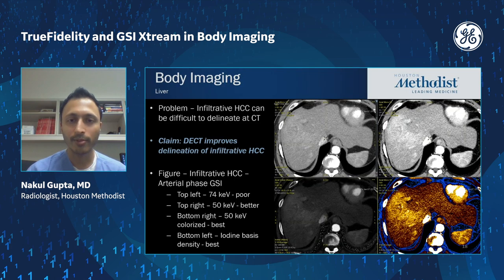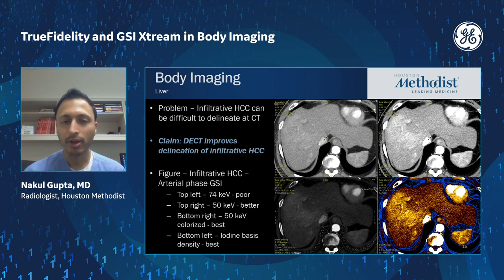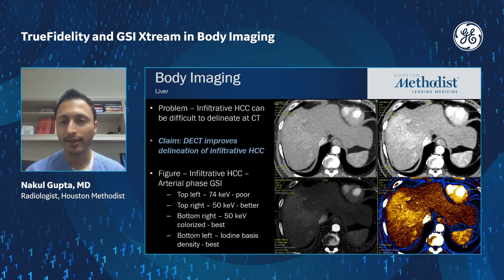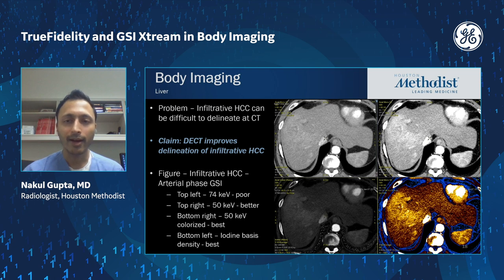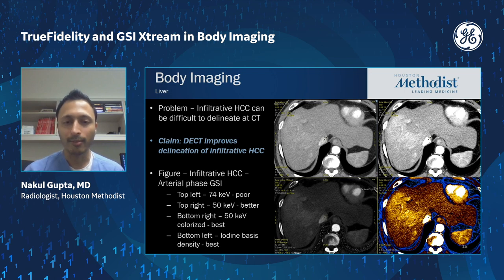Now switching gears to GSI Extreme. Liver imaging is a big use case of GSI or dual energy CT. The image layout has the top left as the 120 kVp equivalent monoenergetic image — in this case at 74 keV — to the right a 50 keV monoenergetic image, below that the same 50 keV image with a color map applied, and bottom left an iodine image. On the 120 kVp image, there's a very subtle area of hypervascularity in the right hepatic lobe that's hard to delineate; it becomes much more conspicuous at 50 keV, especially with the color map, and is very clearly visible on the iodine map.